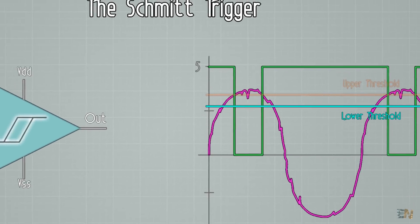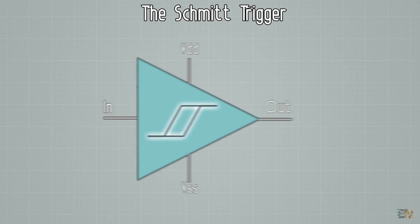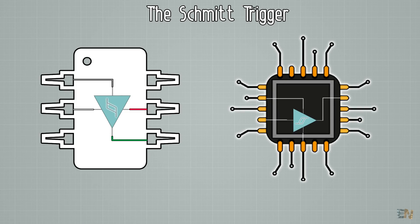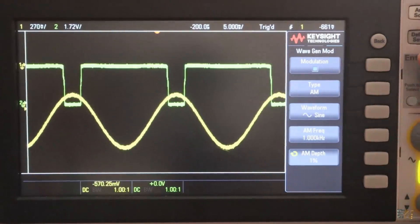So that is the main function of a Schmidt trigger, to convert a noisy signal to a good square wave that could be then read by a microcontroller or other digital components. Lots of ICs already have Schmidt triggers integrated in their inputs. We will look over some other options to create our Schmidt trigger, but first let's test it.